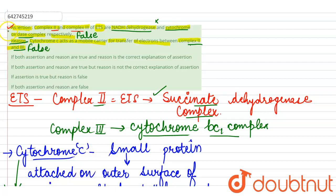Both the assertion and the reason are false statements. So our correct answer is that both the assertion and reason are false.